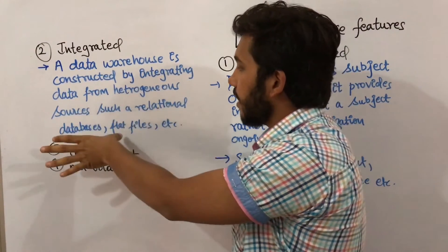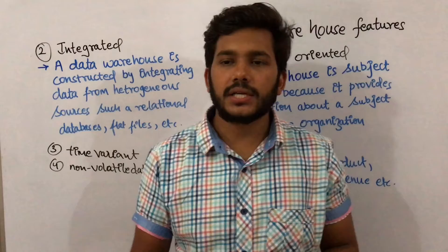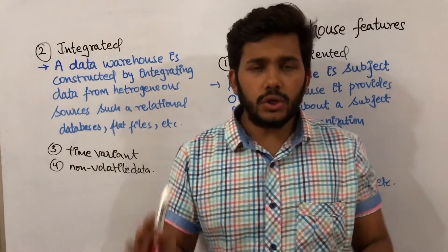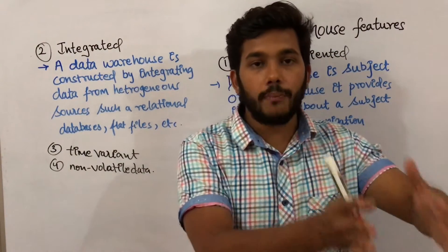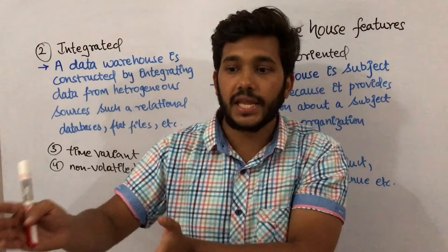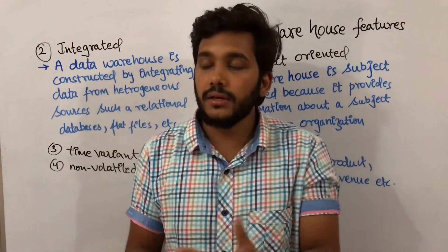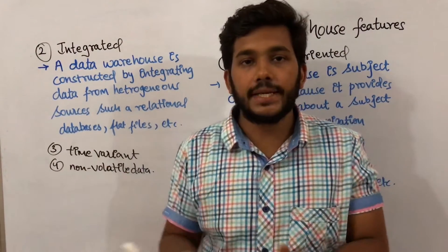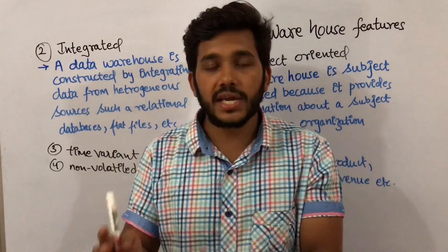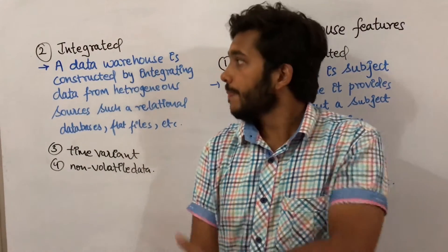The second feature is integrated. A data warehouse is constructed by integrating data from heterogeneous sources such as relational databases and flat files. I can store operational data in a DBMS or flat file system. Data warehouse is an integration of operational databases, flat files, and traditional files — a complete combination of different data sources.